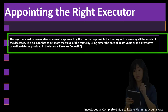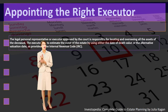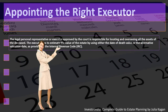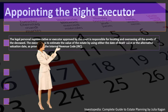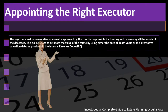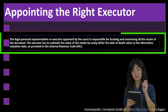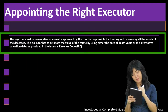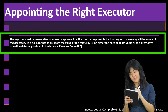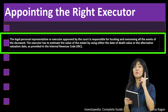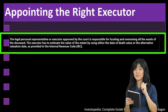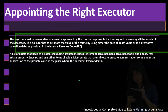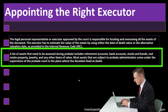Stocks and bonds are fairly easy to value because there's a market for them, but things like a house or jewelry are more difficult because they're unique and harder to value without actually selling them. A list of assets assessed during probate includes retirement accounts, bank accounts, stocks and bonds, real estate, property, jewelry, and any other items of value.